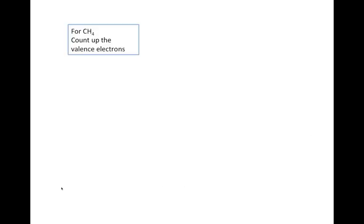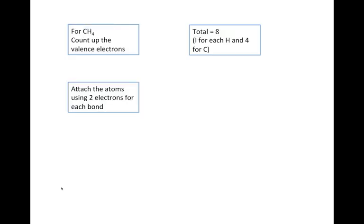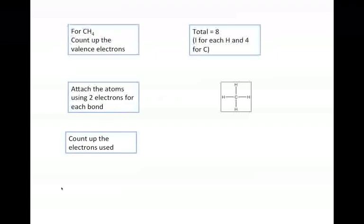Let's take a look at some examples. Here's a simple example, CH4. If we count up the valence electrons, we have a total of eight. One for each hydrogen, and four for carbon. Now we have to attach the atoms, and we use two electrons for each bond. And there's only one way we can attach CH4, because carbon forms four bonds, and hydrogen forms only one. Now, if we count up the electrons used, we've used two in each bond, so we've used eight electrons. We've used them all up, so we're done. Easy.